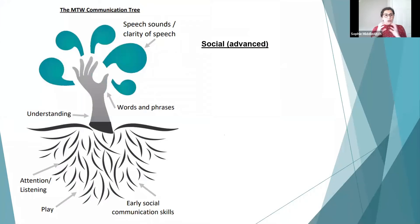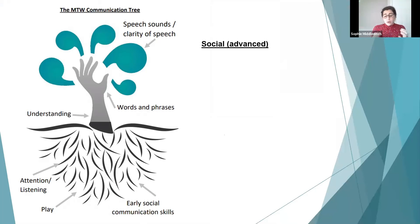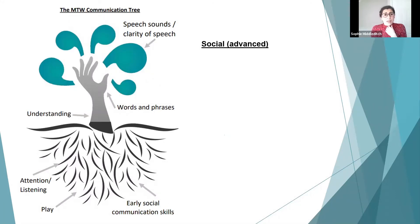Now for the more advanced social skills — not just turn-taking and paying attention, but the more complex social world that emerges in verbal, school-age or teenage years. This can be a really complex world and some people need support with advanced social skills. One approach is social stories.